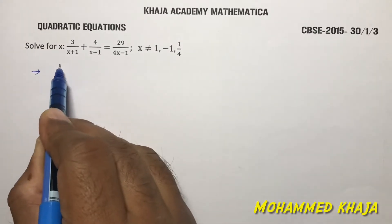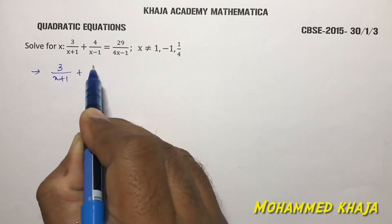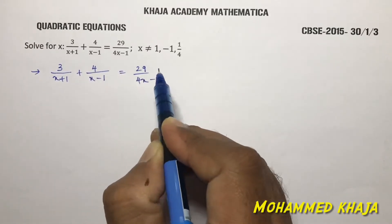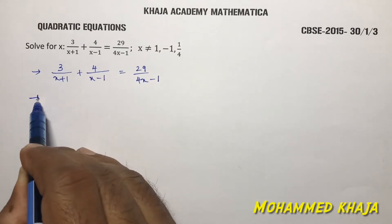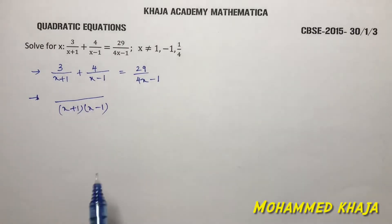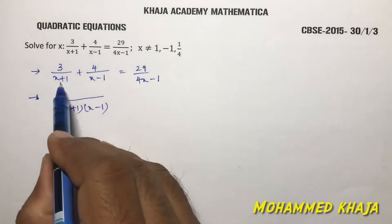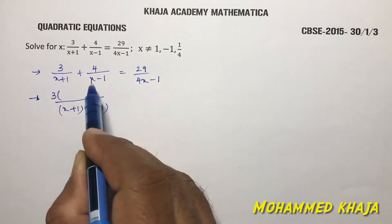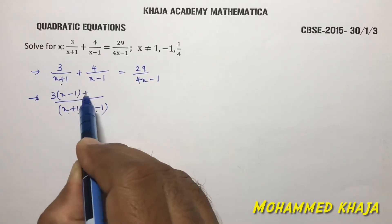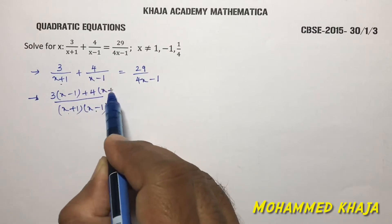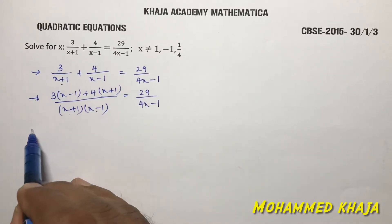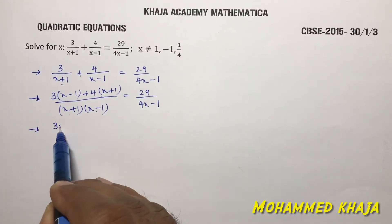In the first step, take the LCM of the two terms 3/(x+1) + 4/(x-1). The LCM is (x+1)(x-1). Cross-multiplying: multiply 3 by (x-1) and 4 by (x+1), giving [3(x-1) + 4(x+1)] / [(x+1)(x-1)] = 29/(4x-1).